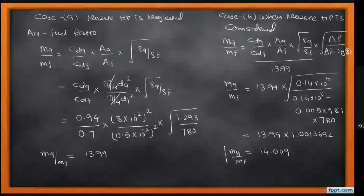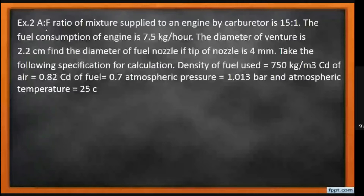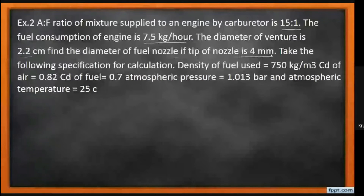So we have two different answers: the air-fuel ratio when the nozzle tip is neglected is approximately 14, and when nozzle tip is considered it is 14.009. This numerical has been asked in four-mark questions in GTO examinations. Numerical number two: the air-fuel ratio of a mixture supplied to an engine by the carburetor is 15:1. Fuel consumption is 7.5 kg per hour, venturi diameter is 2.2 centimeters. Find the diameter of the fuel nozzle if the nozzle tip is 4 millimeters.